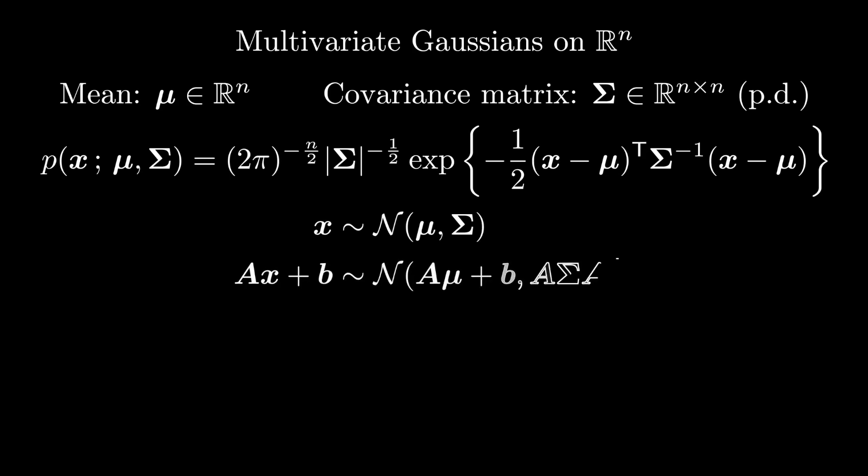As in the univariate case, the multivariate Gaussian is closed under linear transformation. If I take a Gaussian random vector x, and I hit it with a matrix A, and then add a vector b, I get another Gaussian, assuming the dimensions match up. As before, the mean of the transformation is the transformation of the mean. The covariance of the transformation takes Σ and hits it on the left with A, and on the right with A transpose.